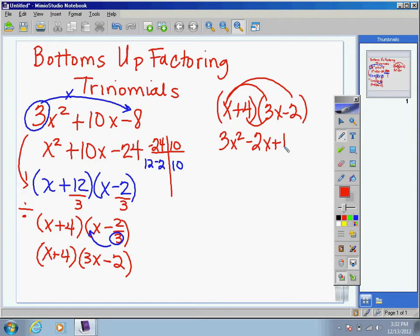First, outer, inner, last. Combine our x terms in the middle, and our resulting trinomial matches the original problem, and we have successfully factored a trinomial with the coefficient of a number other than 1 in front of the x squared term.